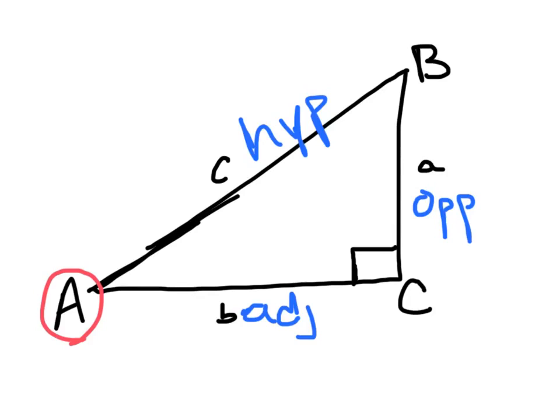So, real quickly, hypotenuse is the line across from the 90 degree angle. The adjacent line is going to be the one touching the angle. The opposite is going to be the one across from the angle.